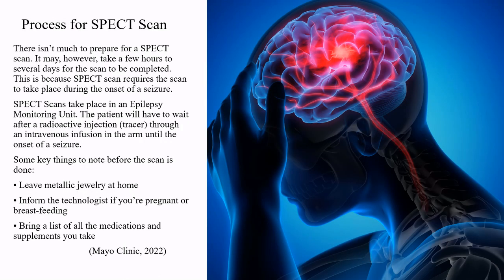There isn't much to prepare for a SPECT scan. However, it may take a few hours to several days for a scan to be completed, because the scan requires imaging during the onset of a seizure. SPECT scans take place in an epilepsy monitoring unit, where the patient waits after receiving a radioactive injection through an intravenous infusion in the arm until the onset of a seizure.